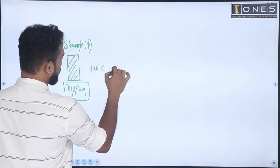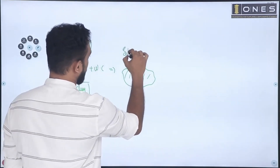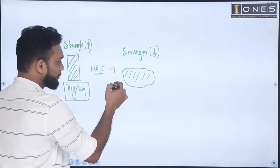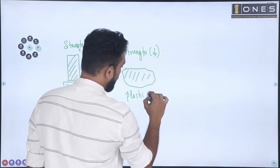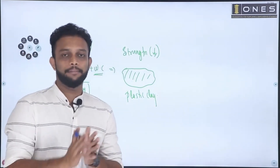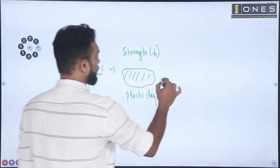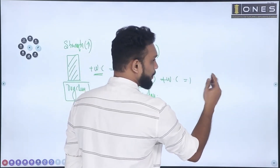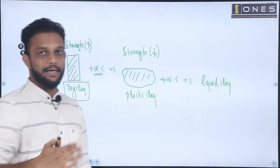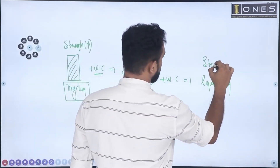If you are adding some water content, the clay becomes distorted in shape. By the addition of water, you are decreasing the strength. What stage is this? The plastic stage — plastic clay. We are changing the structure. If you keep adding more water, it becomes clay in a liquid state, and the strength is further decreased.